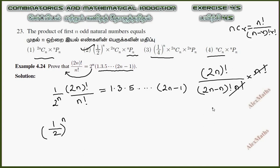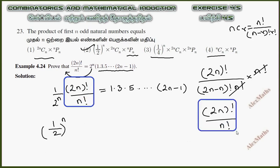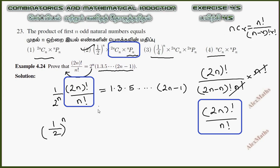So this is (2n)! divided by n!. This is the workout of 2nCn times nPn. So the product of first n odd natural numbers is option 2: (2n)! So this is the complete result — (2n)! over n! times 2^n.